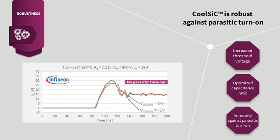As you can see in the figure, the difference between switching a CoolSiC MOSFET with -5V gate voltage and 0V gate voltage is negligible. This proves that you can really drive the CoolSiC MOSFET with zero-volt turn-off.